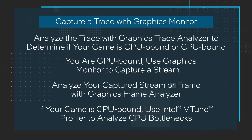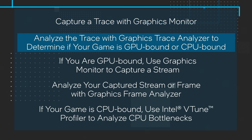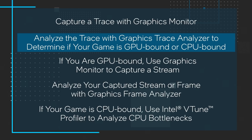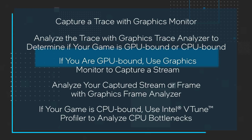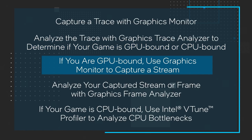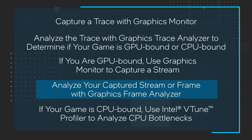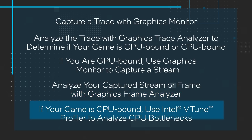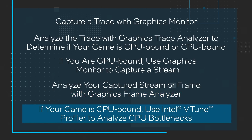Step one, capture a trace with graphics monitor. Step two, analyze the trace with graphics trace analyzer to determine if your game is GPU bound or CPU bound. Step three, if you are GPU bound, use graphics monitor to capture a stream. Step four, analyze your captured stream or frame with graphics frame analyzer. Step five, if your game is CPU bound, use Intel vTune profiler to analyze CPU bottlenecks. The article also provides links to additional tools and resources to help you go deeper.